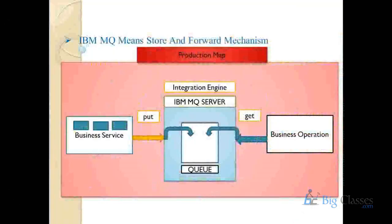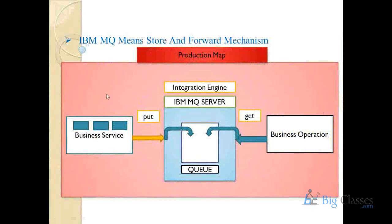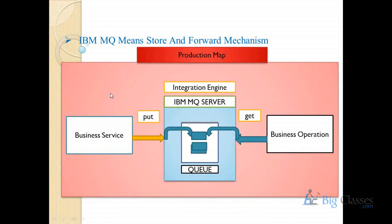IBM MQ means store and forward mechanism. IBM MQ is an integration engine that integrates two distributed programs over the network to access business data. Whenever a service puts data on IBM MQ server, whenever the remote service requests data, the Q forwards it. Business message delivery can happen once and only once — it does not support duplicate delivery. Once a remote service reads the data on the Q object, the data is no longer available.